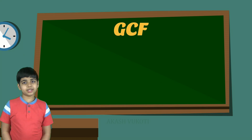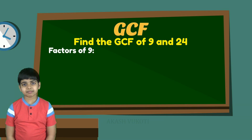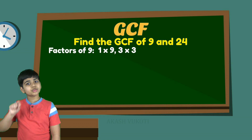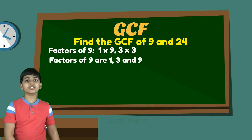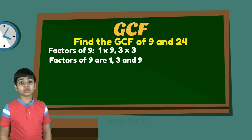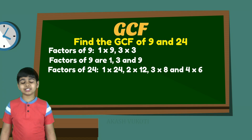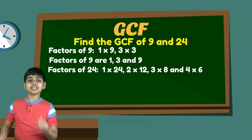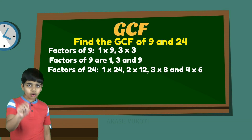Now let's take another example: 9 and 24. First, let's find the factors of 9. Obviously, there's 1 times 9 and then there's 3 times 3. So, the factors of 9 are 1, 3, and 9. Now, for 24, there's 1 times 24, but there's also 2 times 12, then 3 times 8, and also 4 times 6. All of these multiply to give 24.